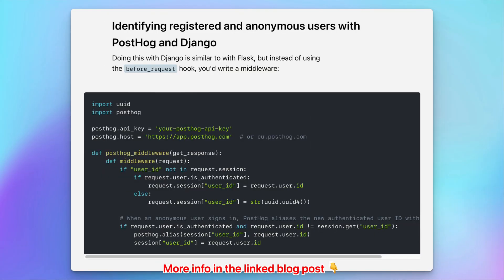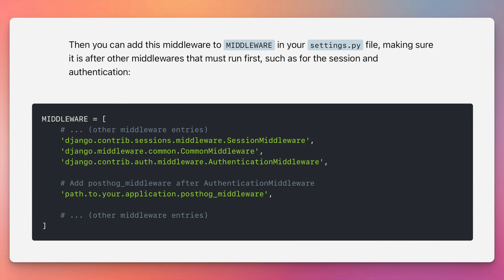When using Flask, I use app.before_request to run this code on every request. If you're using Django, you'd write a middleware to do this. The code looks identical — just make sure to import it in your settings.py under middleware, and ensure the middleware goes under any other required middleware such as common middleware, session middleware, and so forth.